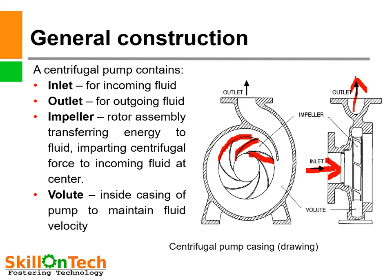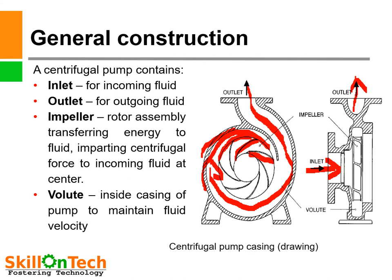This rotor assembly transfers energy to fluid, imparting centrifugal force to incoming fluid at the center. Here you can see this is a volute casing — the area of the volute casing is increasing. This area is getting increased, so this converts the kinetic energy of liquid into pressure energy at the discharge. If you install a pressure gauge at the discharge nozzle of the pump, you can see what is the manometric head developed by a centrifugal pump. This complete action is due to centrifugal force generated by an impeller.